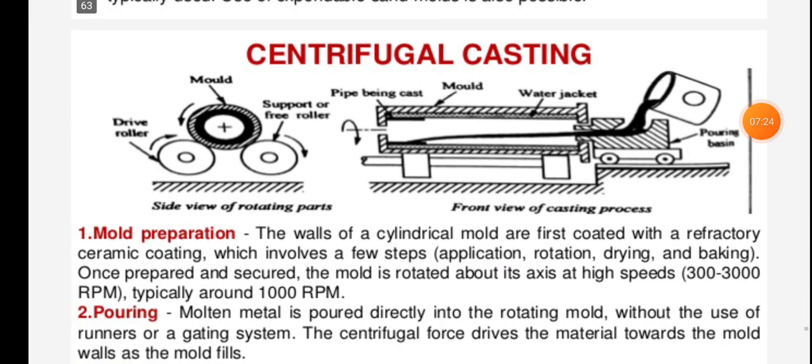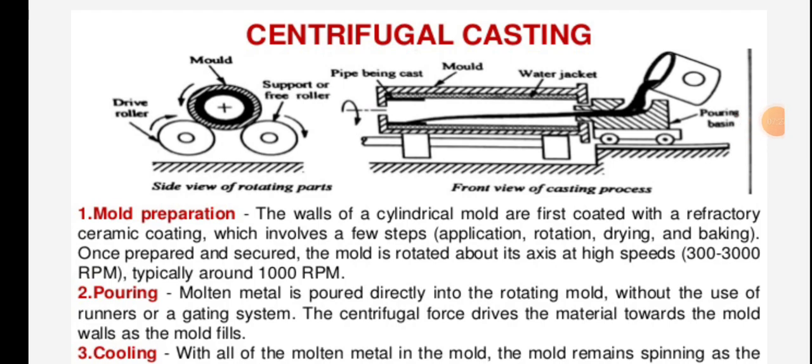In centrifugal casting, a slide view of the rotating parts shows the drive roller, roller, and support or free roller, along with the mold. The front view of the casting process shows the pipe being cast, the mold, water jacket, and pouring basin.